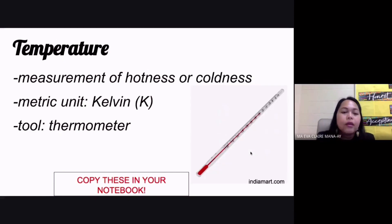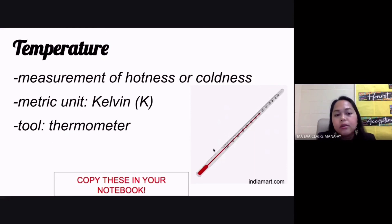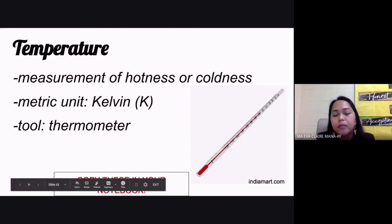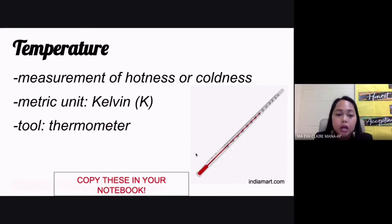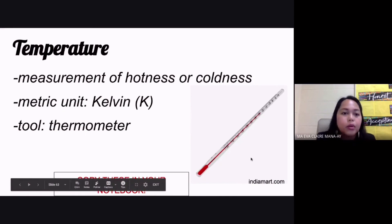Another thing that you oftentimes measure in the lab is temperature — the measurement of hotness or coldness. The metric unit is not Celsius, and it's not even Fahrenheit. That would be Kelvin. The tool that we use, of course, would be your thermometer. There can be two types of thermometer in your lab: the one with the red liquid is your alcoholic thermometer, and the one with the silver liquid is your mercurial thermometer. We do not really use the mercurial thermometer now, so that's your alcoholic thermometer that we see in the picture.